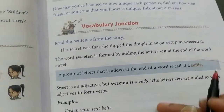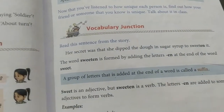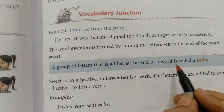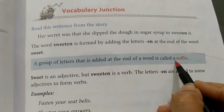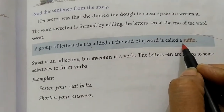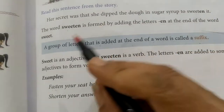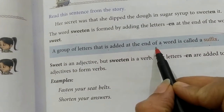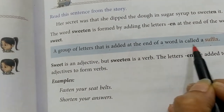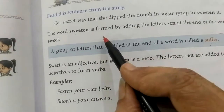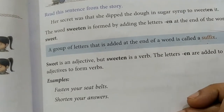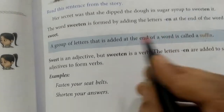Now you must have recollected the concepts of verbs and adjectives. So let us take a look at another concept — the concept of suffix. A suffix is a group of letters that is added at the end of a word to make a new word.